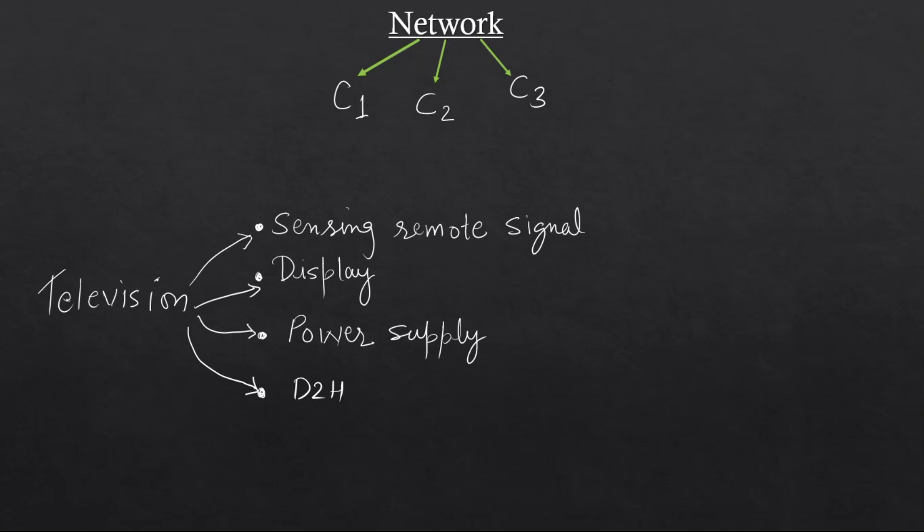Another example you can take from a car. It has an accelerator which itself is a system in itself. Then a steering wheel. Then your music system is also installed. This way there will be multiple systems inside a single large system. Those systems will be called as a subsystem. In network terminology, that entire system is called as a network, and subsystems are called as a circuit.